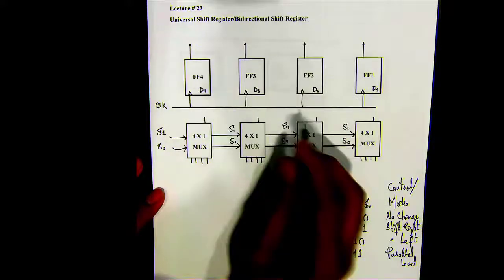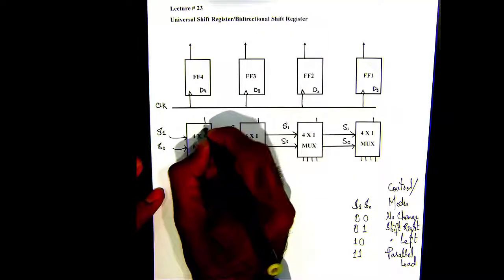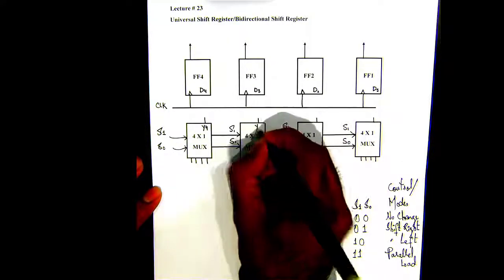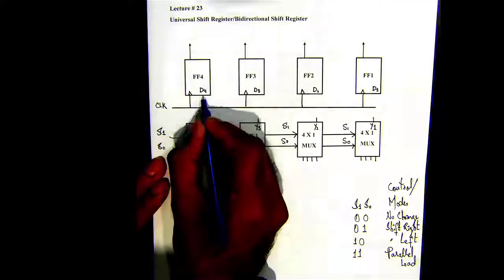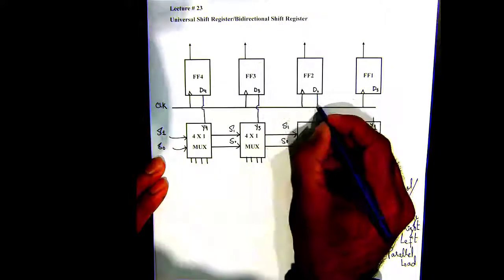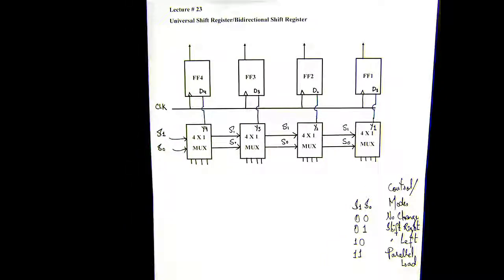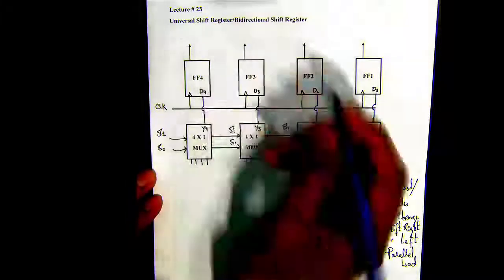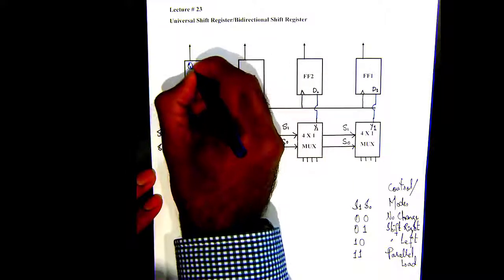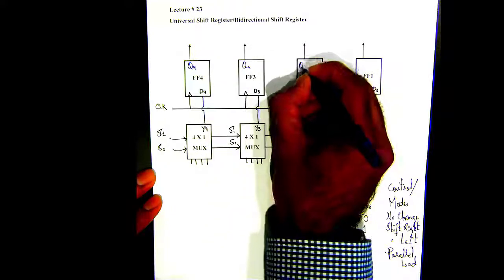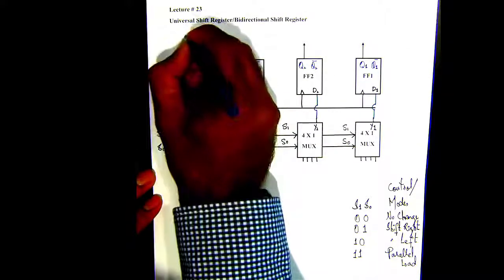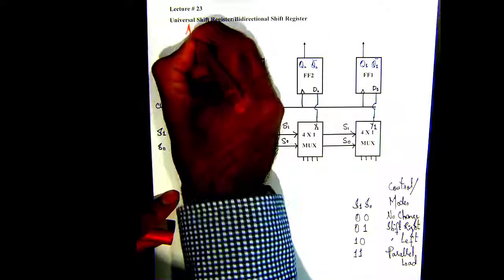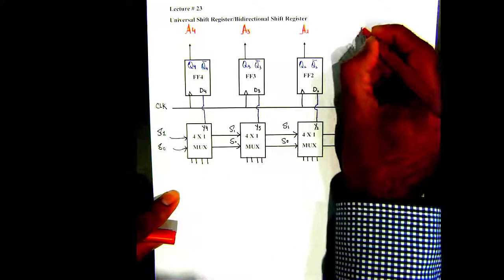These are the outputs of the mux, so we just label them as Y4, Y3, Y2, Y1. And then we have these outputs for the flip-flop. This will be Q4, Q3, Q2, Q1. And then these are the outputs right here, you've got A4, A3, A2, and A1.